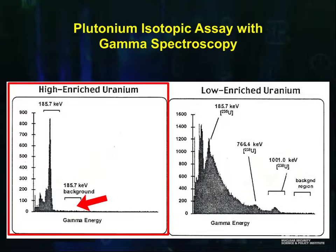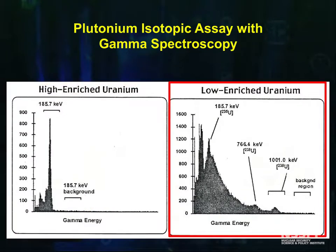There are no signature emissions from uranium 238. The second spectrum is from low enriched uranium, and you can plainly see the contributions at 766.4 keV and 1001 keV from the uranium 238.